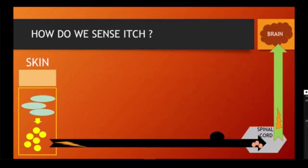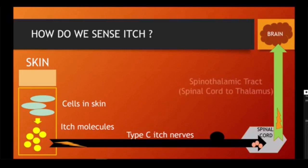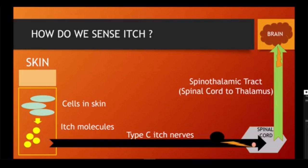First, I wanted to talk about the neurobiology of itch — how do we sense itch? Because if we can understand this better, we should be able to treat it better. Many cell types in our skin secrete molecules we'll call itch molecules, also called pruritigens. These molecules stimulate itch nerves to send a signal through the spinothalamic tract all the way up to our brain — from skin to itch nerve, to spinal cord, to brain.